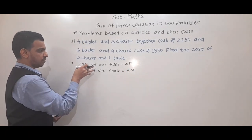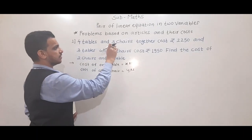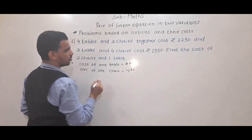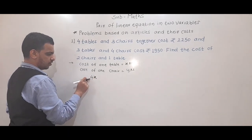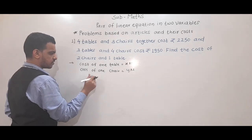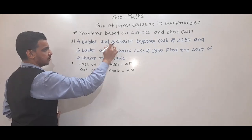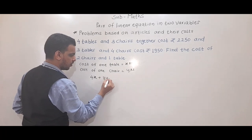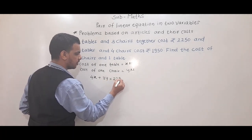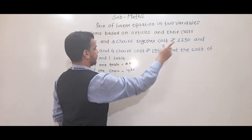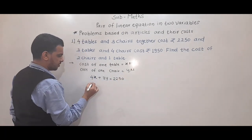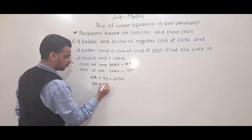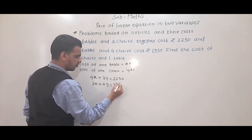We form linear equations using the given information. 4 tables and 3 chairs together cost rupees 2250, so the first equation is 4x plus 3y equals 2250. The second equation: 3 tables and 4 chairs cost rupees 1950, so 3x plus 4y equals 1950.